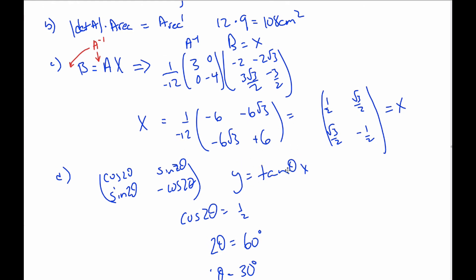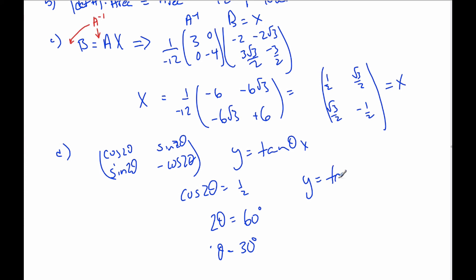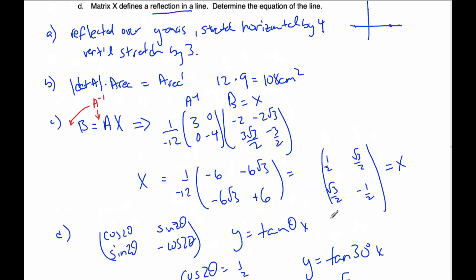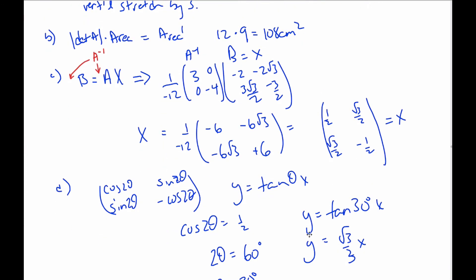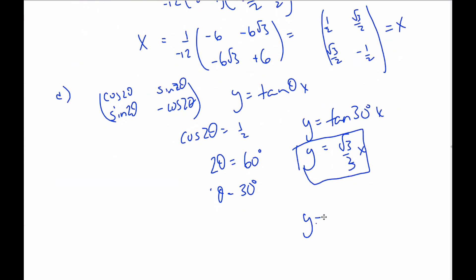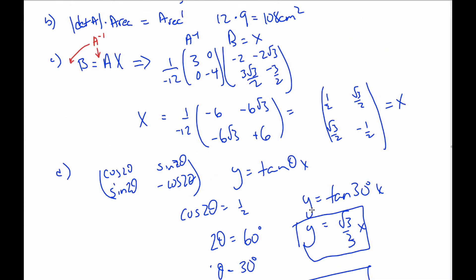And specifically, it is tangent 30 degrees of X. Well, I've put this in my calculator, and again, I know this one off by heart, the exact value. I get square root 3 over 3. And this is the equation of the line, which I could also do as Y equals 0.577 X, which is also the equation of the line. And that is what is represented by matrix X.